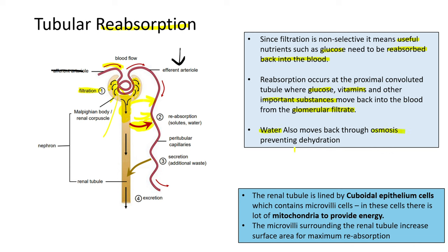During tubular reabsorption, water also moves back through osmosis — this prevents dehydration. When glucose and important nutrients move from the proximal convoluted tubule into the surrounding blood capillaries, water follows back into the blood as well. We don't want to lose water; we just want waste products to leave the body. The substances reabsorbed include both solutes and water.